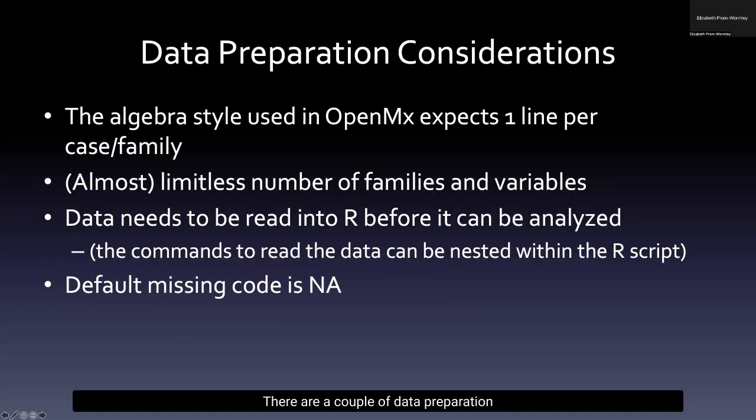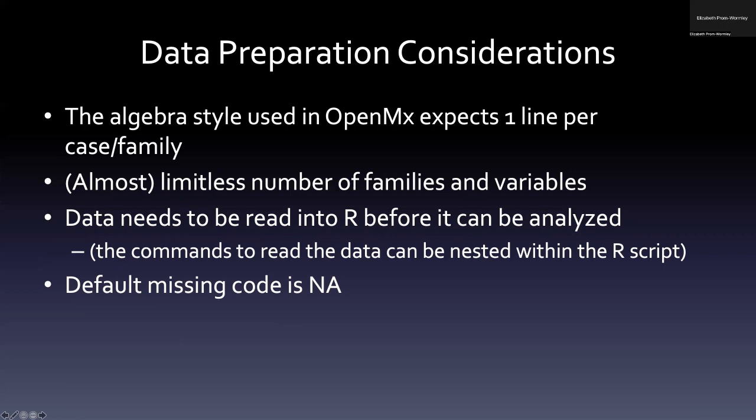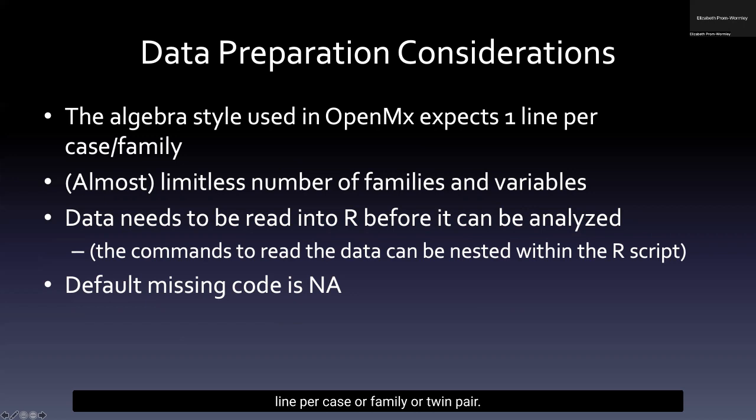There are a couple of data preparation considerations that you should keep in mind, particularly as you're working with twin and family data. In particular, the algebra style that's used in OpenMX when working with twin or family data expects one line per case or family or twin pair. Therefore, you have an almost limitless number of families that can be used, as well as variables.